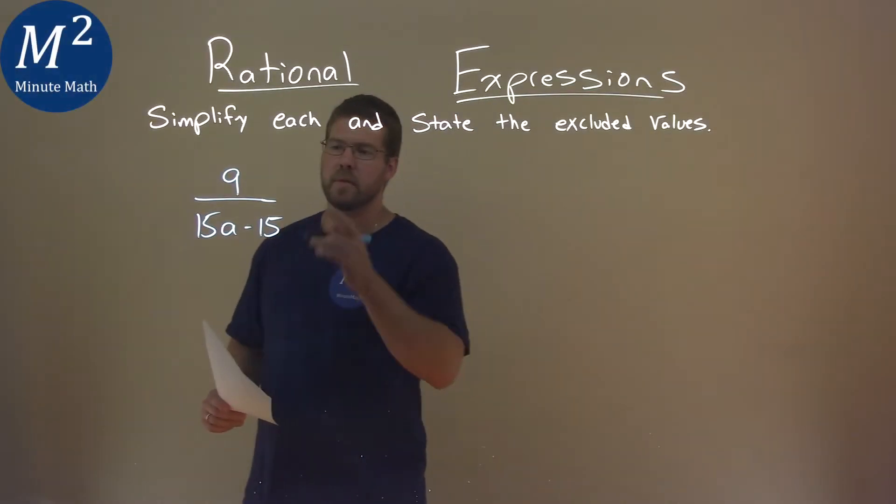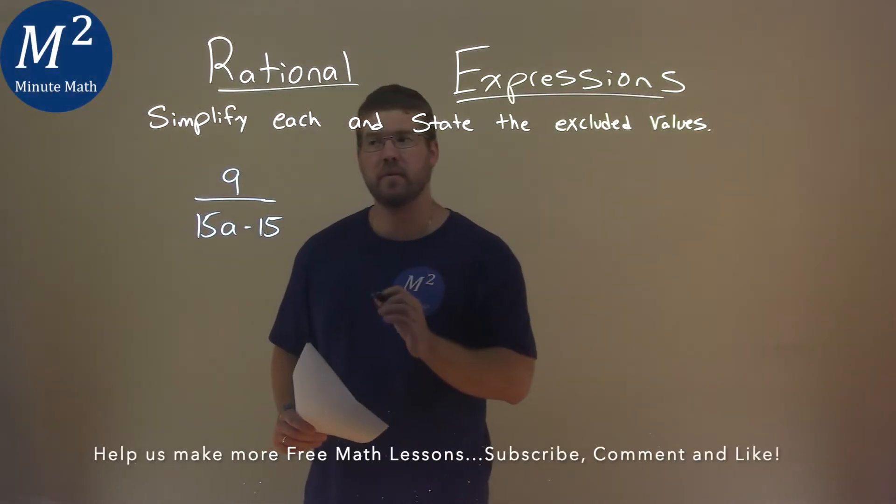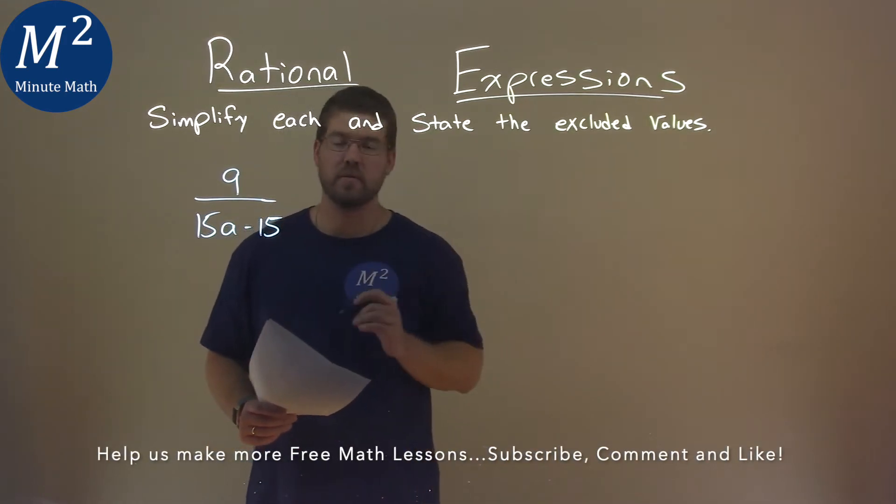We're given this problem right here, 9 over 15a minus 15, and we've got to simplify this and state the excluded value.